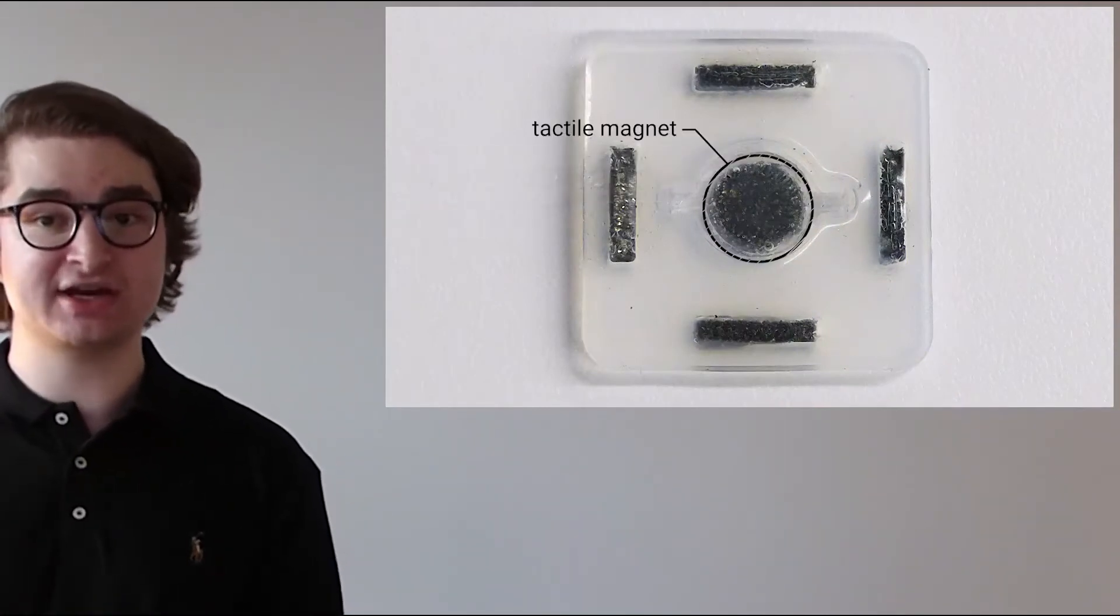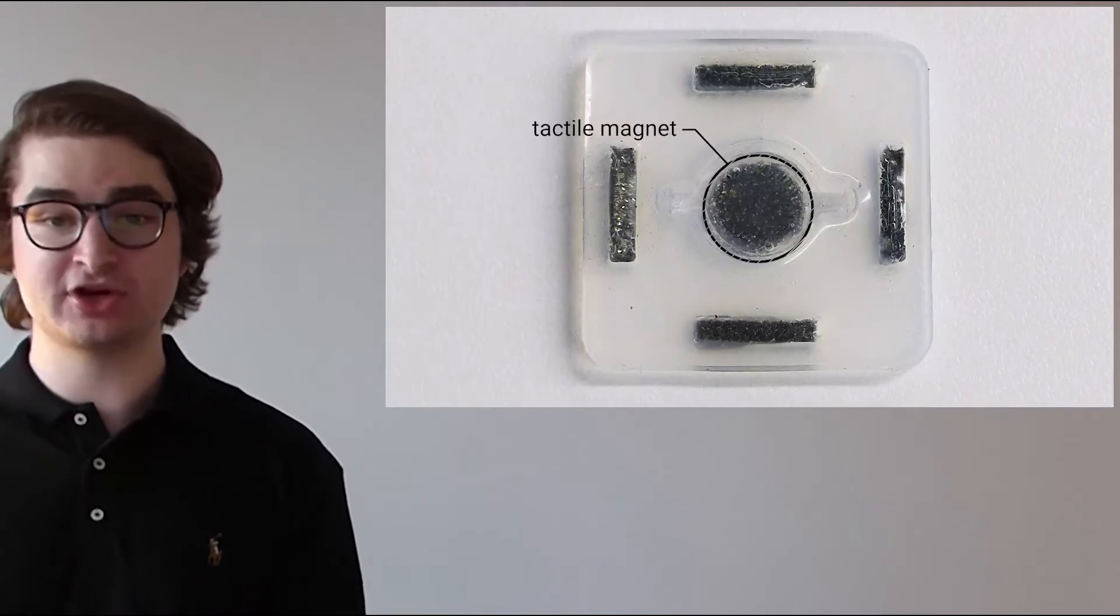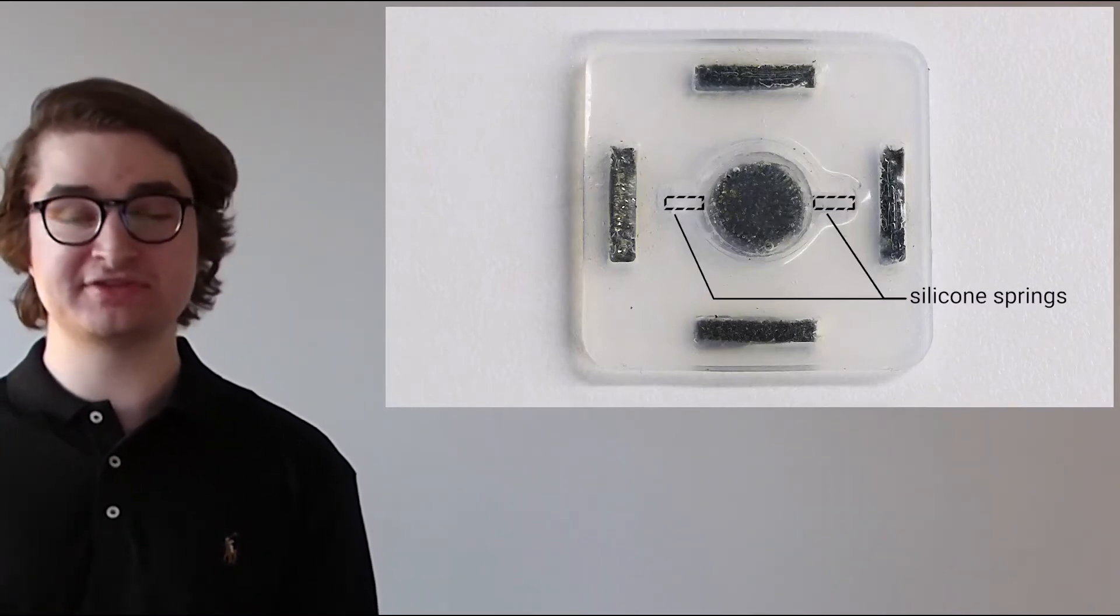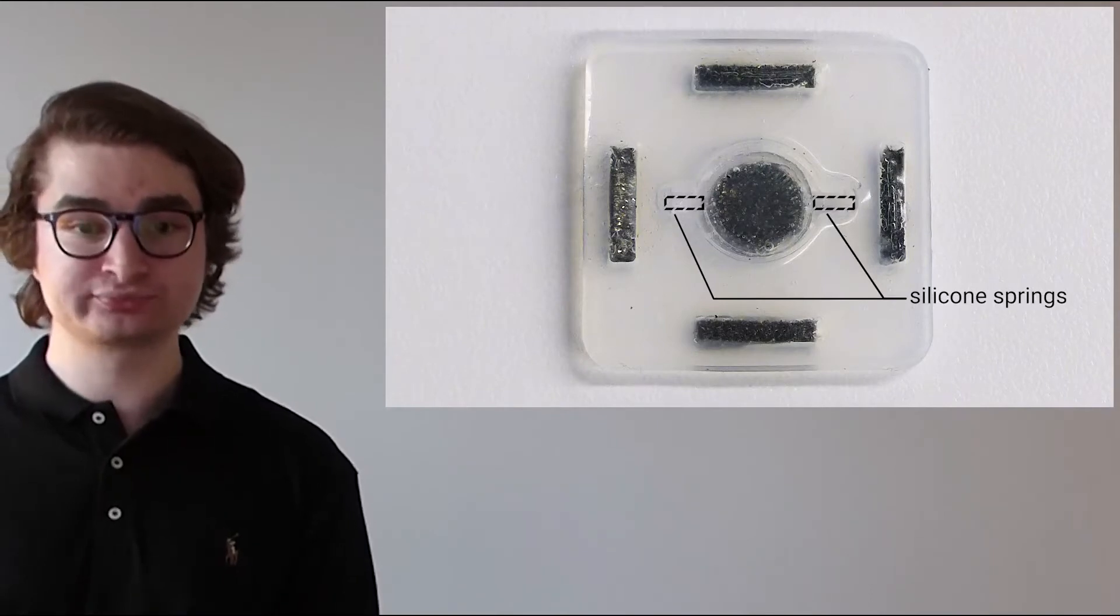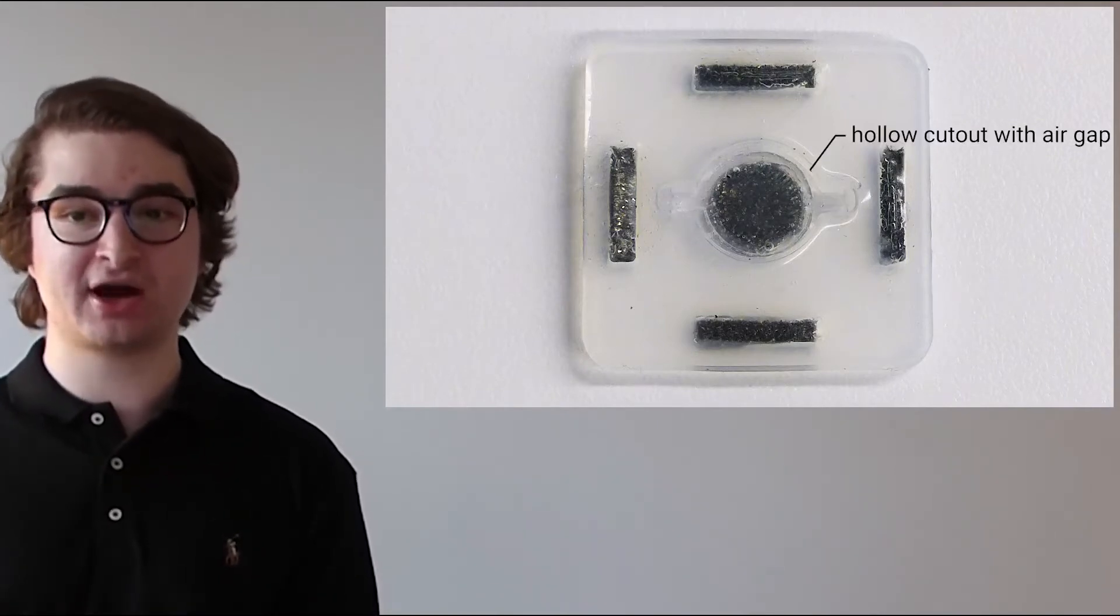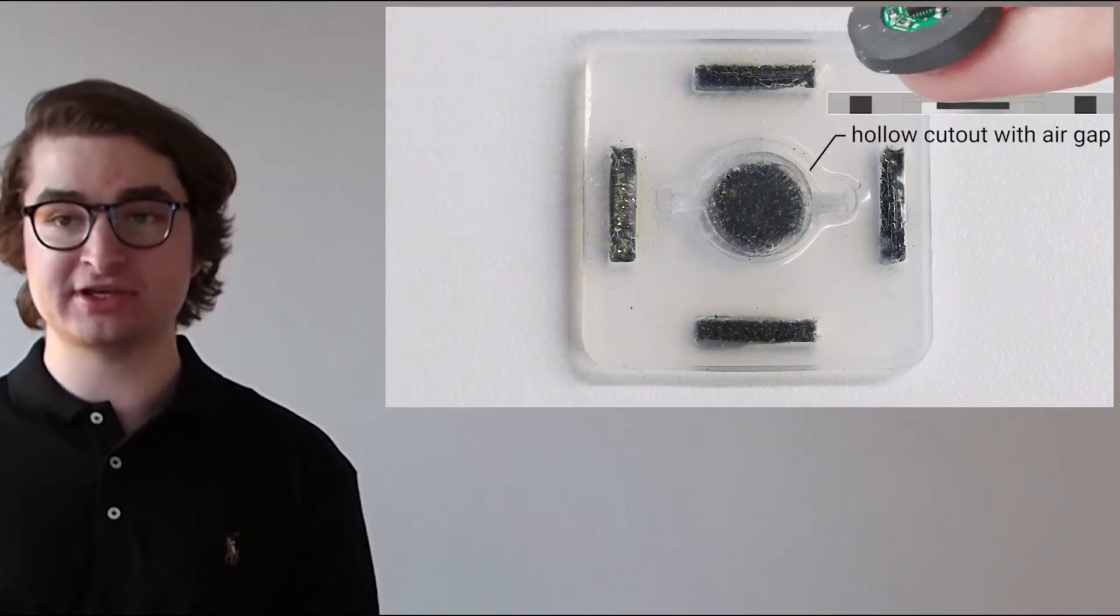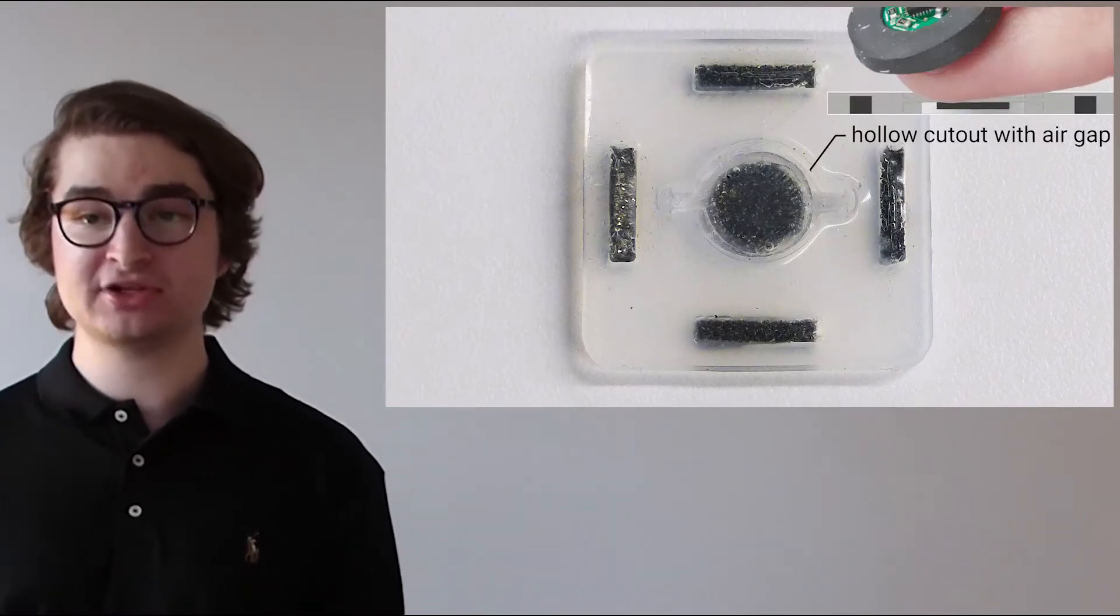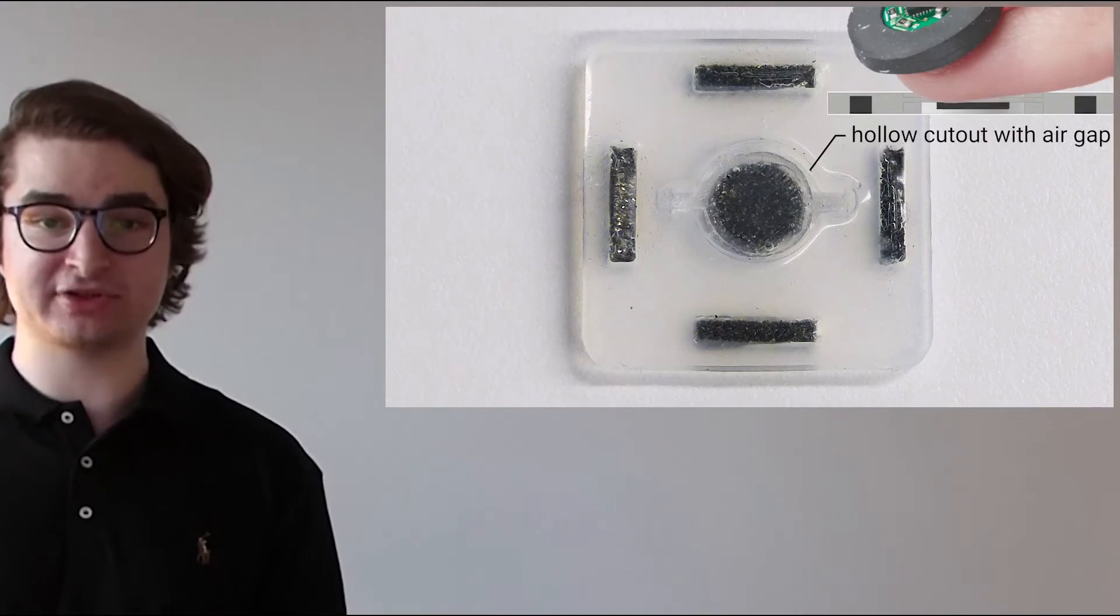At the center of the patch is a tactile magnet made from silicone doped with magnetic powder. This magnet is mounted on two thin beams of silicone that act as springs. Surrounding the magnet is a cutout, and the magnet rests within an air gap. This allows the magnet to vibrate up and down, even when the user compresses the patch with their finger.